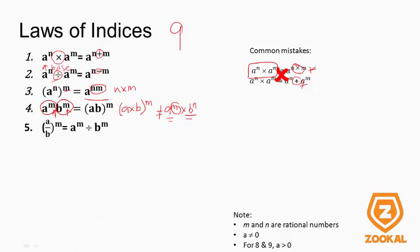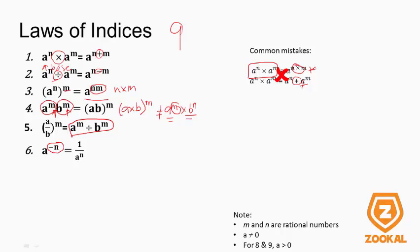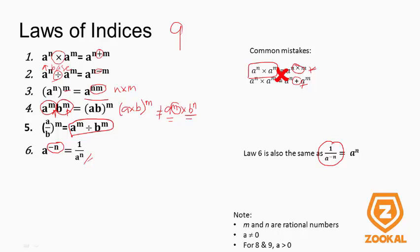Law 5: A over B, all to the power of M — we can separate them into A to the power of M over B to the power of M. Law 6: whenever there's a negative power, it results in a fraction. Similarly, Law 7: if it's a fraction with a negative power, this will become a whole number expression.